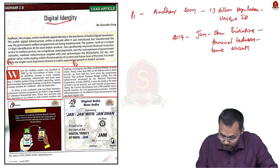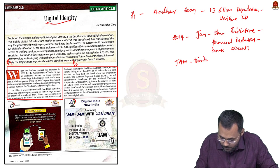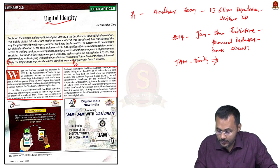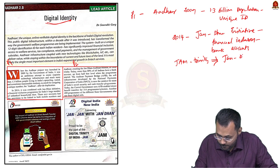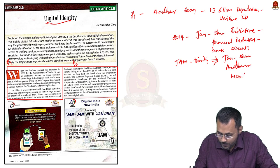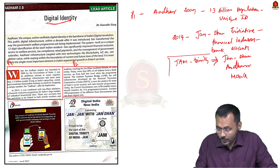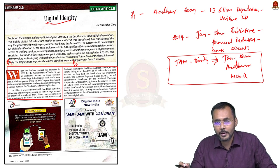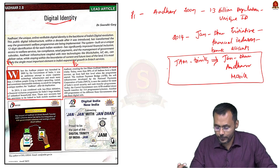The most important concept is the JAM Trinity — combining three factors: Jan Dhan, Aadhaar, and Mobile. As a common man, when they have all three, they are digitally included in the development process. A common man having a mobile number, an Aadhaar, and a bank account is digitally identified, which helps in his socio-economic development. That is called JAM Trinity.